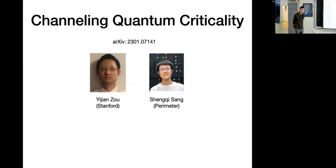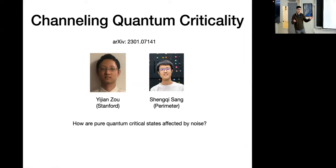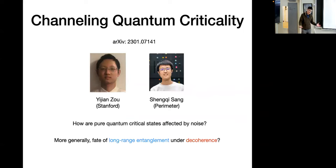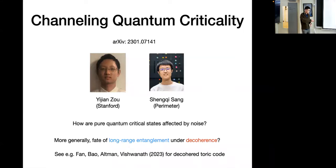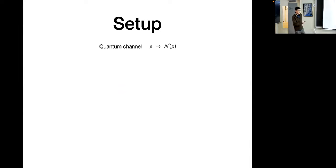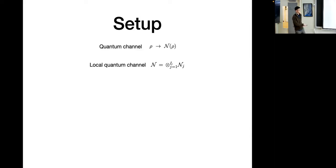I see I'm running pretty low on time, so I'll try to be brief with the second part. The starting point of the second part is very different — now we want to start out with a pure quantum critical state and see what local noise does to it. This is part of a bigger program of examining how long-range entanglement fares under decoherence. There has been a very nice recent work from the Harvard and Berkeley group looking at toric code under local decoherence. Here, the local quantum channel will literally be a tensor product of single-qubit dephasing channels — either measuring the qubit in a given direction V with some probability P, or doing nothing.